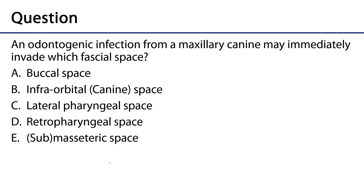The assessment question: an odontogenic infection from a maxillary canine may immediately invade which fascial space? The buccal fascial space is in the vicinity, so let's consider it. The infraorbital or canine space sounds really good. The lateral pharyngeal space is too far posteriorly and deep. Retropharyngeal space is way too posterior and deep. The submasseteric space is again too far posterior. The division between the buccal and infraorbital spaces is the posterior border of zygomaticus major — the canine is anterior to that, ruling out the buccal space. The infraorbital — canine — space is the correct answer.